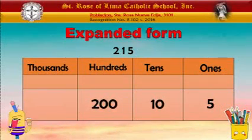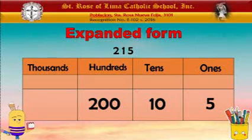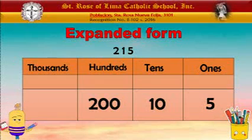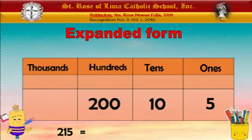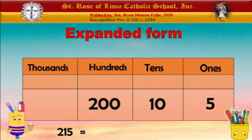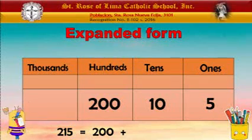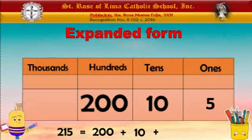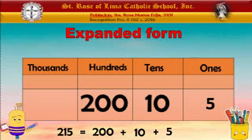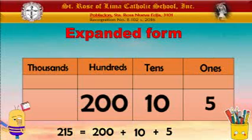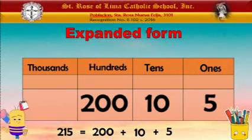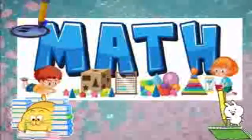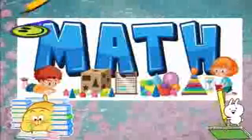Another example is 215. The value of 5 in 215 is 5, the value of 1 in 215 is 10, and the value of 2 is 200. The biggest place value here is the hundreds, not the thousands. So we start with 200 plus, then move to tens: we write 10 plus. And next is the number in ones, which is 5, so we write 5. The expanded form of 215 is 200 + 10 + 5. That is how the place value and the expanded form work in mathematics.